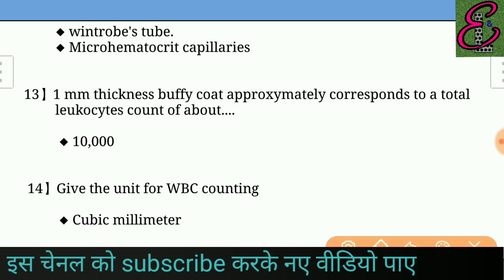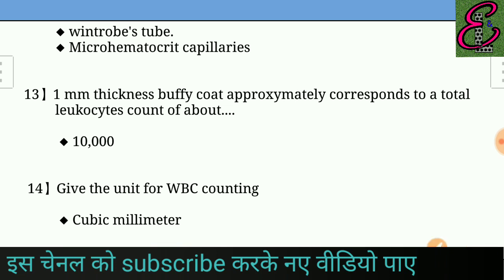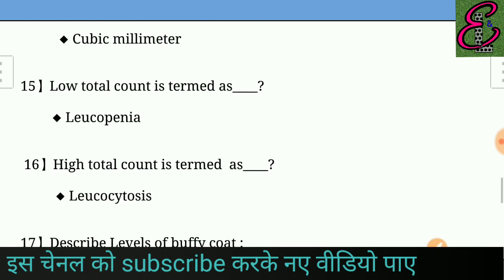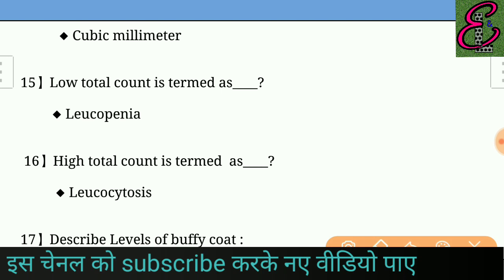Question number fourteen: Give the unit for WBC counting. Answer: The unit for WBC counting is cubic millimeter.